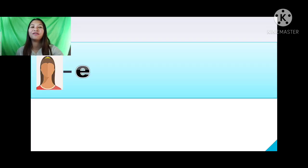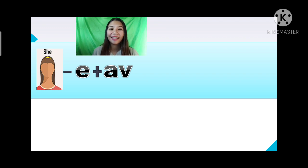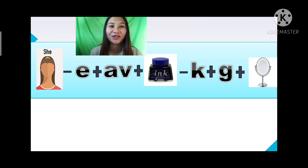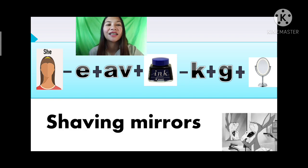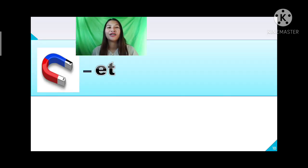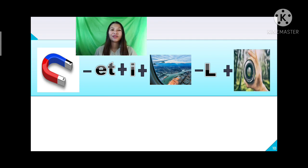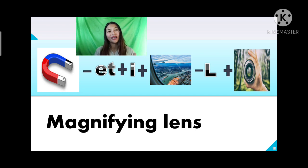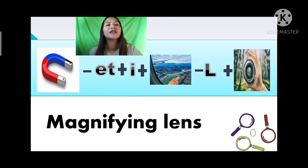Now let's have the second word: S-H-E plus E plus A, B plus the picture minus K plus G plus the picture — if you got shaving mirror, give yourself a thumbs up because you are correct! For the third word: the picture minus E, T plus I plus the picture minus L plus the picture. The first picture is a magnet, the second is about flying, and the third is about lenses. The answer is magnifying glass — give yourself a thumbs up if you got it right.